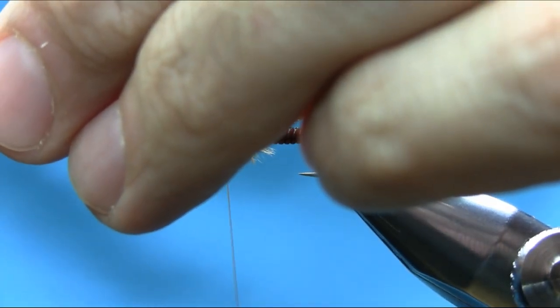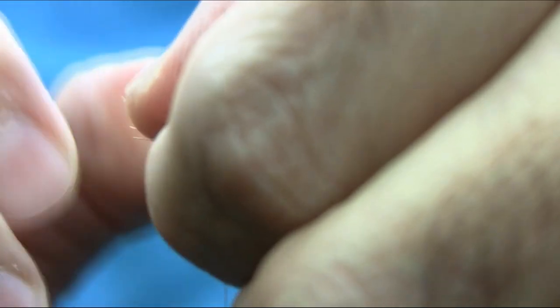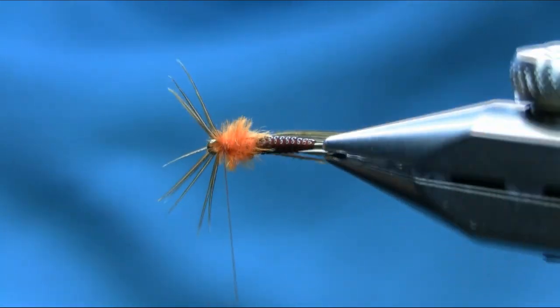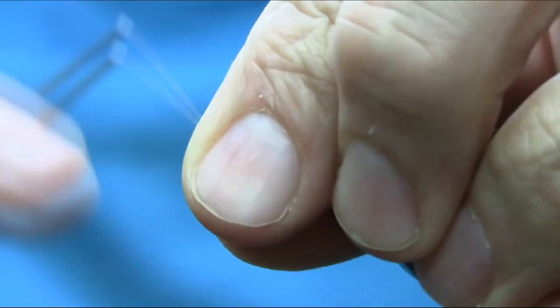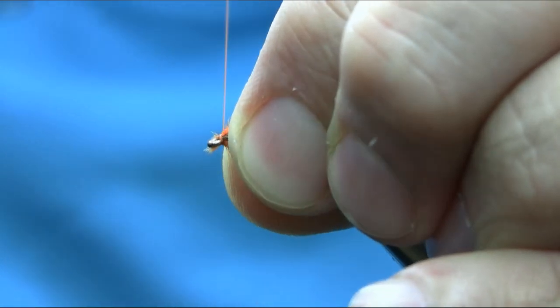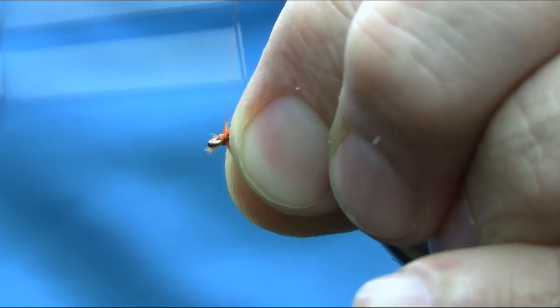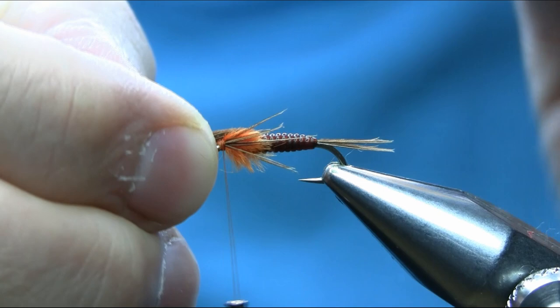Now here you have to spread these legs equally on either side. Just stroke them backward, bring this forward for the thorax.